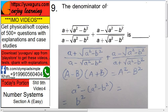The denominator of this whole expression: (a + √(a² - b²))/(a - √(a² - b²)) plus (a - √(a² - b²))/(a + √(a² - b²)).